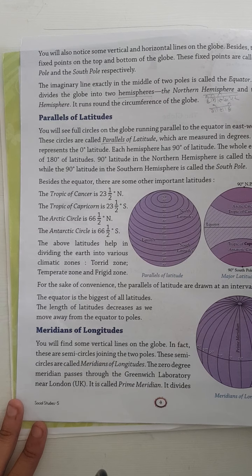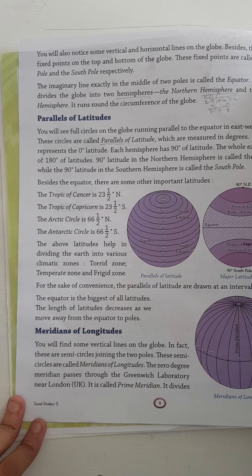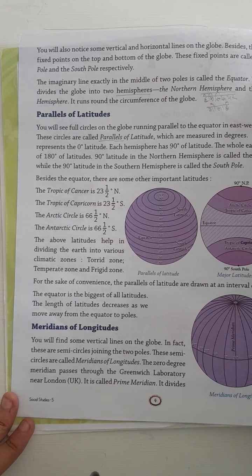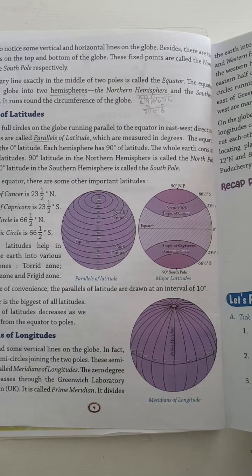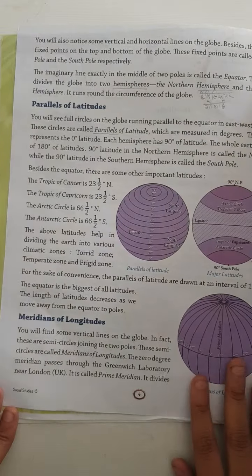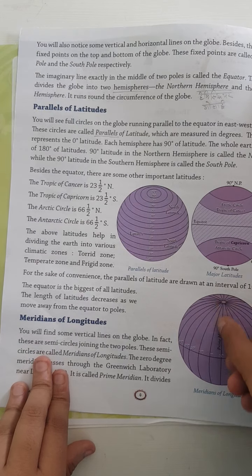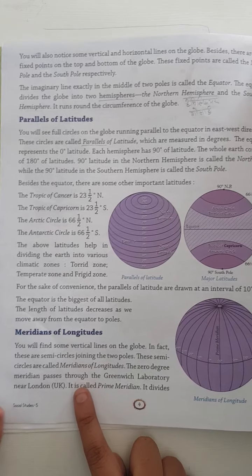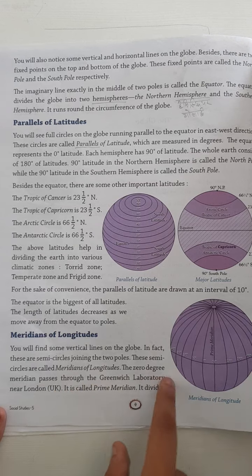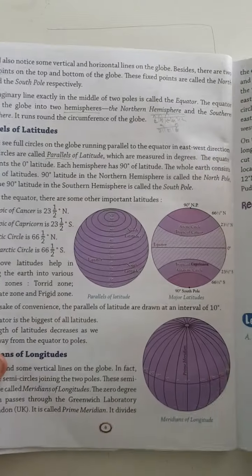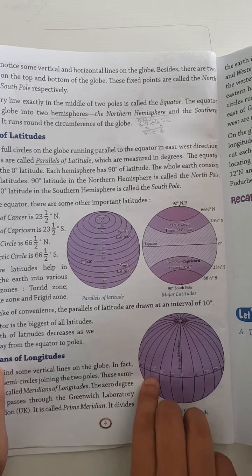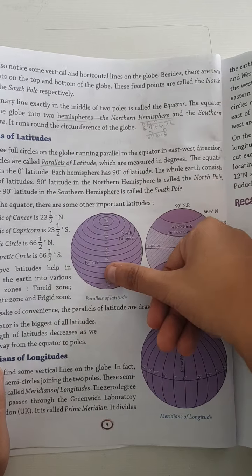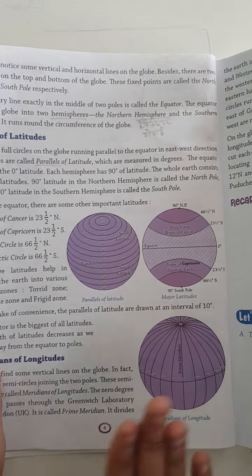Now, meridians of longitudes. You will find some vertical lines — these are called longitudes. These are semicircles. The 0-degree meridian passes through a Greenwich laboratory near London in the UK — this is called the prime meridian. It divides the earth into two hemispheres: the eastern hemisphere and the western hemisphere. The equator divides the earth horizontally into the northern hemisphere and southern hemisphere.